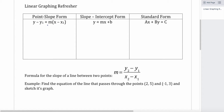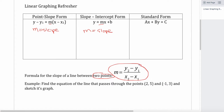In point-slope form you have y minus y1 equals m times x minus x1. The m in that equation refers to the slope of the line, and the same is true in slope-intercept form. Sometimes you'll be given the slope; other times you'll just be given two points. If you're only given two points and not the slope, you'd find the slope using this formula — subtract the two y-coordinates, subtract the two x-coordinates, and divide. Once you get that number, you can use it for your slope.